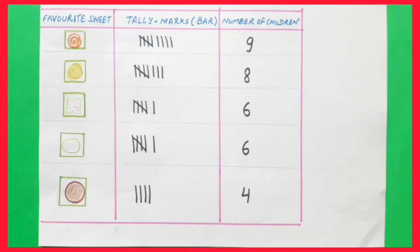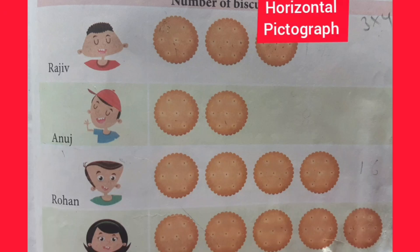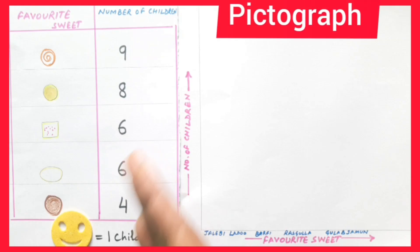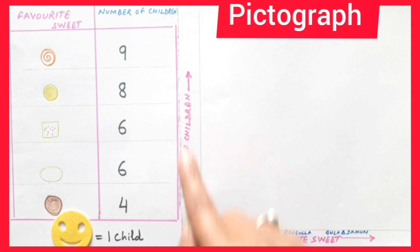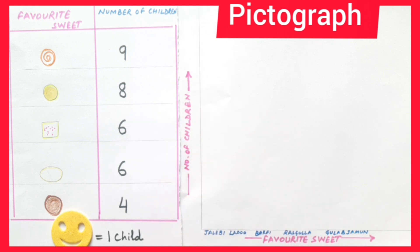Now, children, we will write this information in the form of a pictograph. This is the horizontal pictograph which you have already learned. Today we will write it vertically. Here, from left to right we have written favorite sweet, and from down to up we have written number of children. Here, one smiley represents one child.